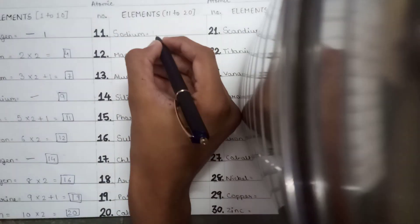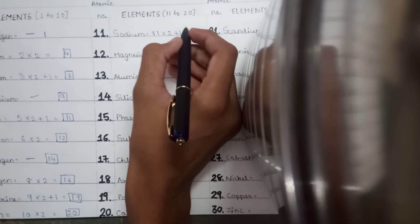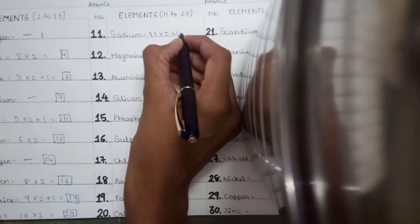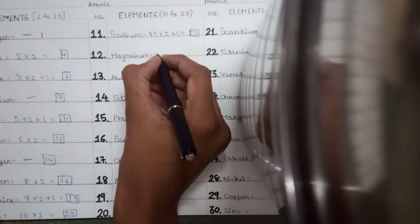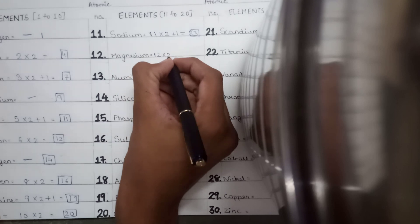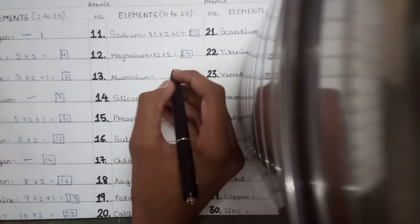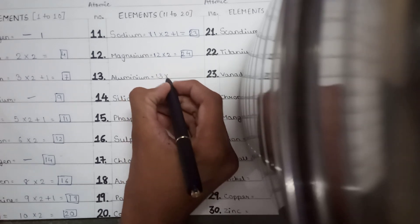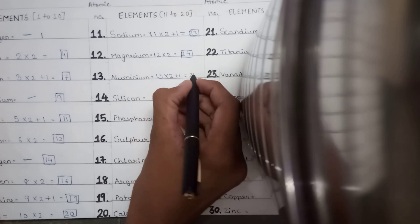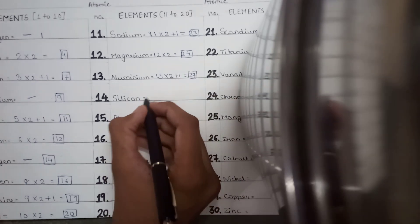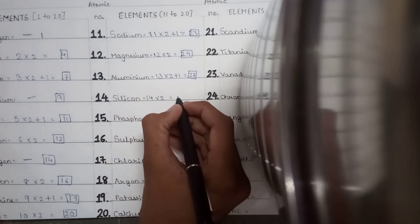Now elements 11 to 20. Sodium's atomic number is 11, which is odd, so 11 into 2 plus 1 equals 23. Magnesium: atomic number 12 is even, so we just multiply by 2 to get 24. Aluminium: 13 into 2 plus 1 equals 27. Silicon: 14 into 2 equals 28.